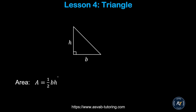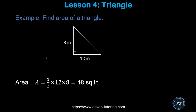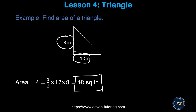Now we'll learn how to find the area of a triangle. The area of a triangle equals base times height divided by 2, or one-half times base times height. Let's apply this to a real problem. The triangle has a base of 12 and height of 8. Using the formula, one-half times 12 times 8 gives you 48 square inches.